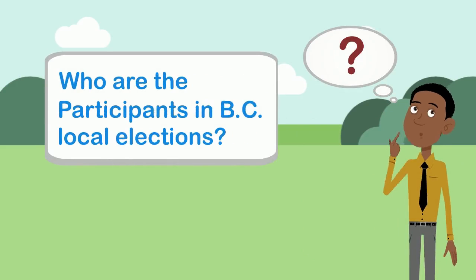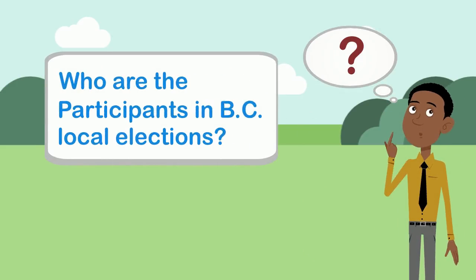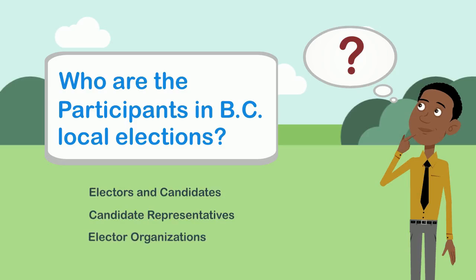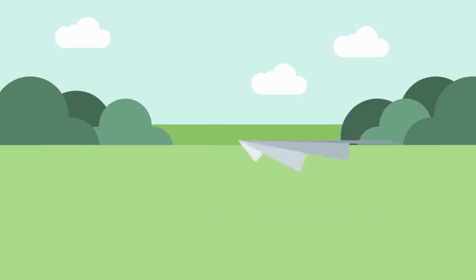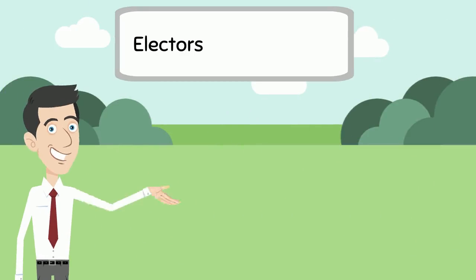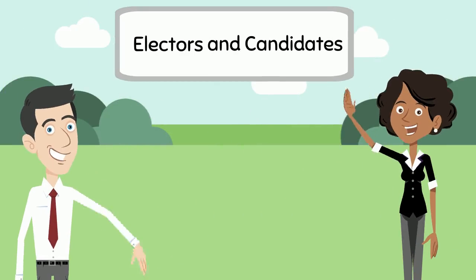This presentation will introduce you to some of the roles and organizations involved in local elections, including electors and candidates, candidate representatives, elector organizations, and third-party sponsors. The participants most people are familiar with are electors — the people voting in an election — and candidates, the people running for local office.